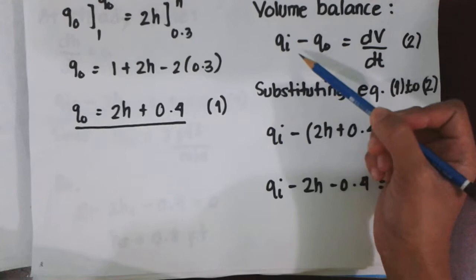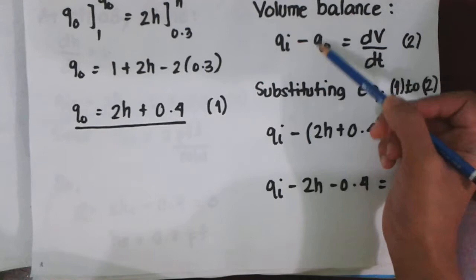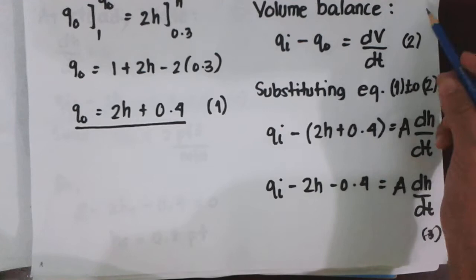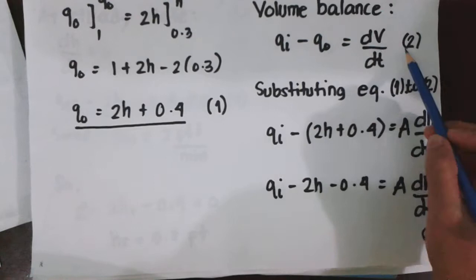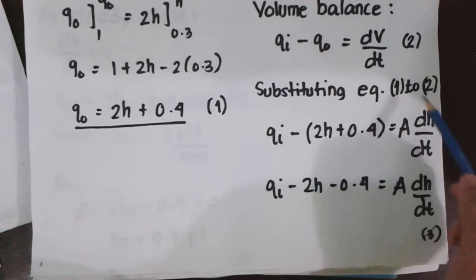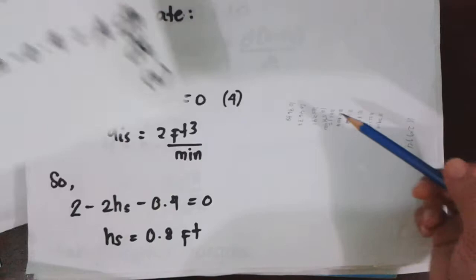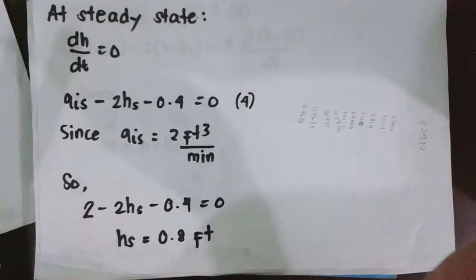In terms of variables, we have Qi, which is the entering flow rate, minus the Qo, the outlet flow rate, equals the rate of accumulation in the tank. Combining equations 1 and 2, we have this following differential linear equation. But before proceeding to the transfer function, we must introduce deviation variables.